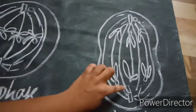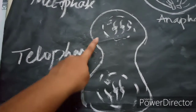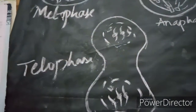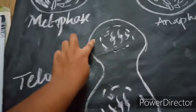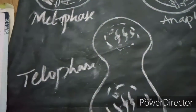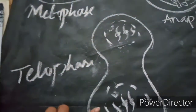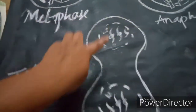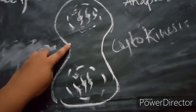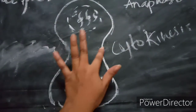In telophase, a furrow or constriction occurs in the cell. The chromosomes decondense to form chromatin fibers, and the nucleolus and nuclear envelope reappear. The spindle fibers break down and are absorbed into the cytoplasm, resulting in two daughter nuclei formed at the opposite poles.